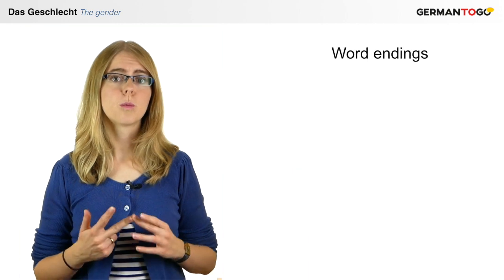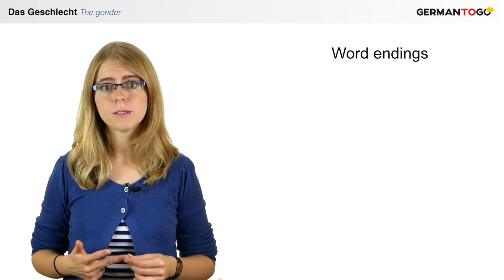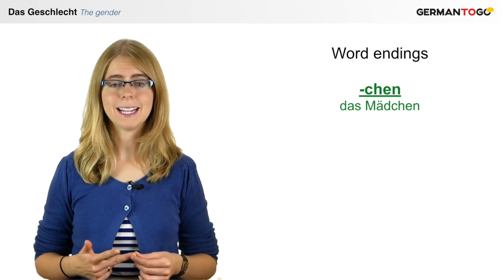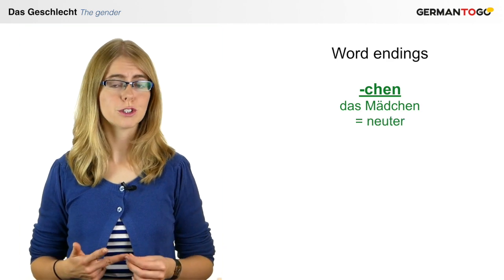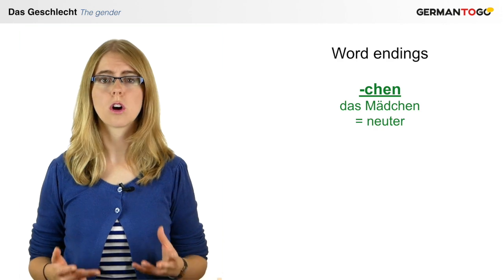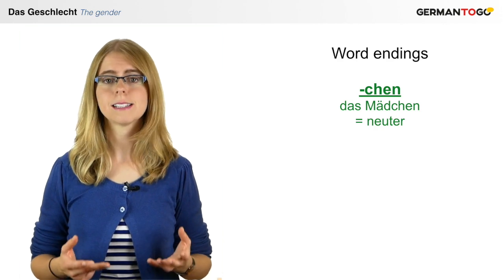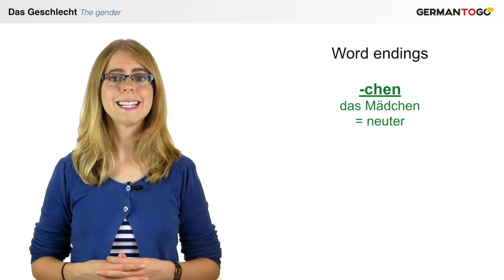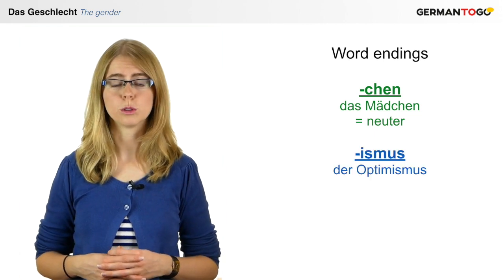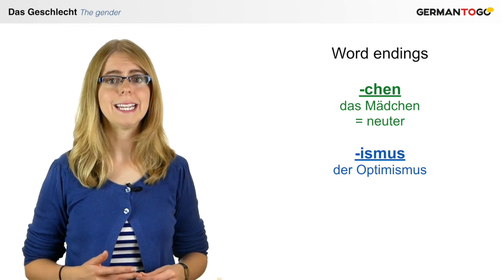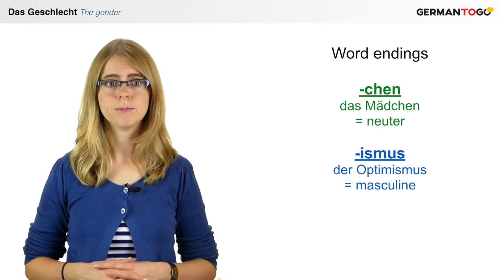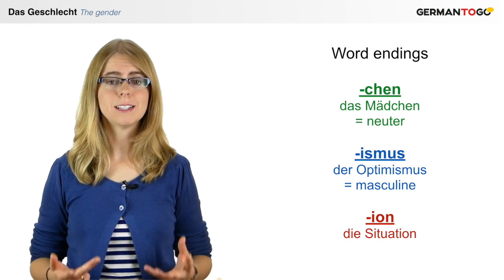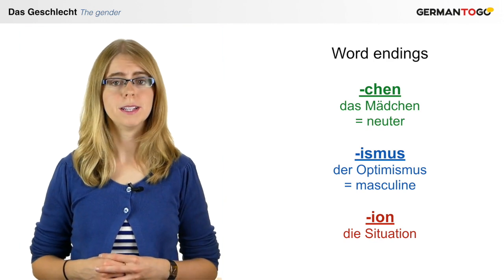And then there are the word endings. For example, we've seen das Mädchen — it has the ending '-chen', and that's why it is neuter, because '-chen' is an ending used for all diminutives. Another example is the ending '-ismus', as in der Optimismus — all nouns with the ending '-ismus' are masculine. And then the ending '-ion', as in die Situation, shows that the word is feminine.